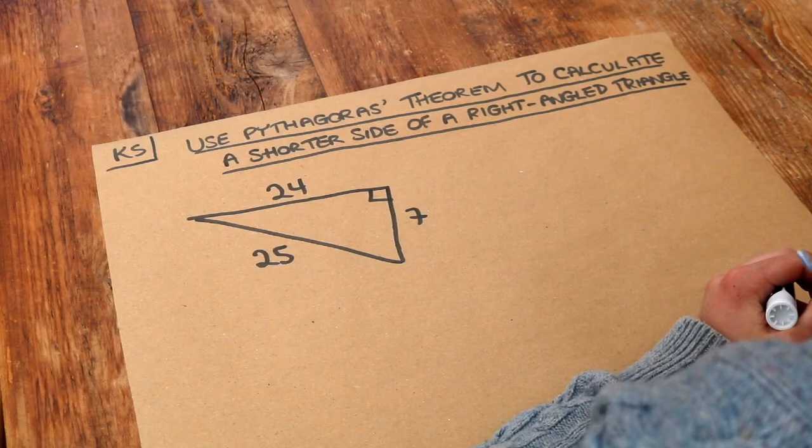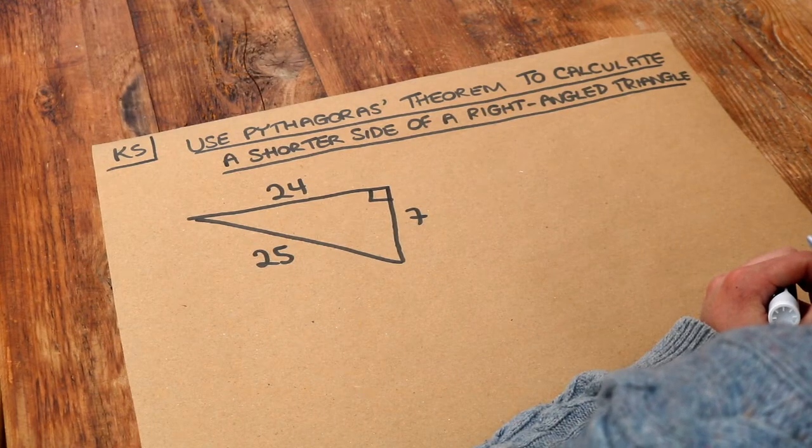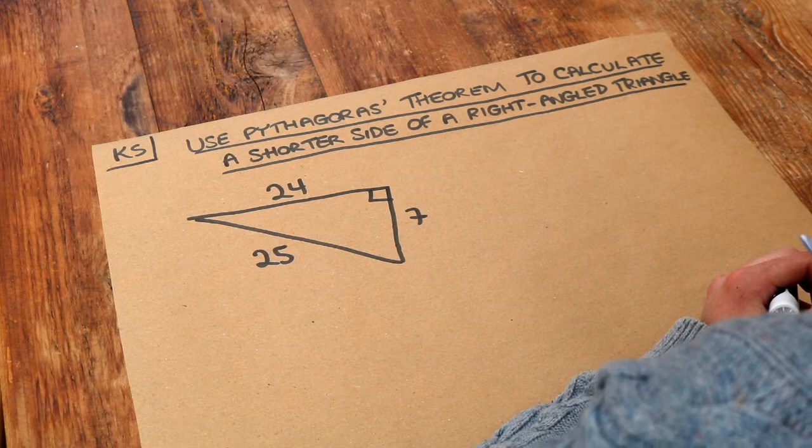Hello and welcome to Dr. Frostmast's key skill video on using Pythagoras theorem to calculate a shorter side of a right-angled triangle.